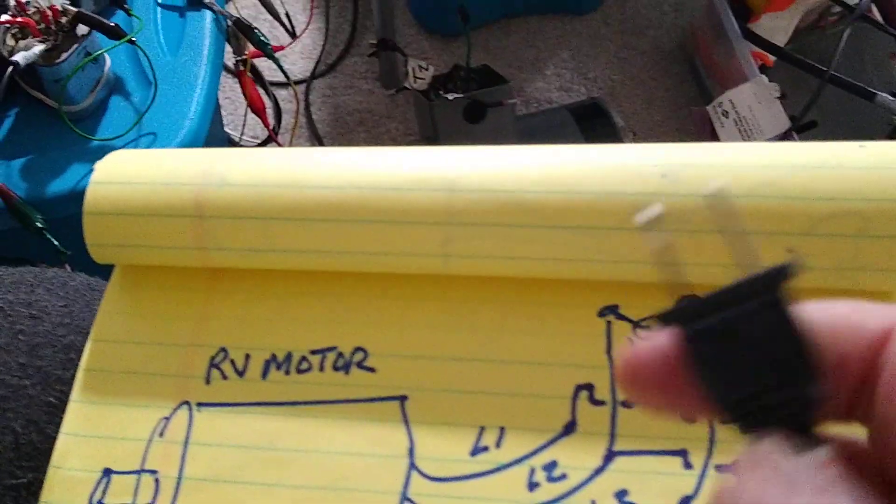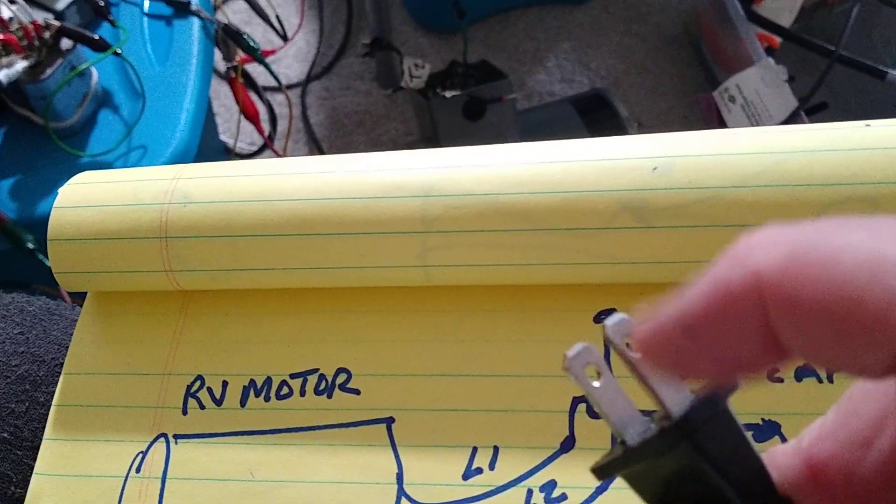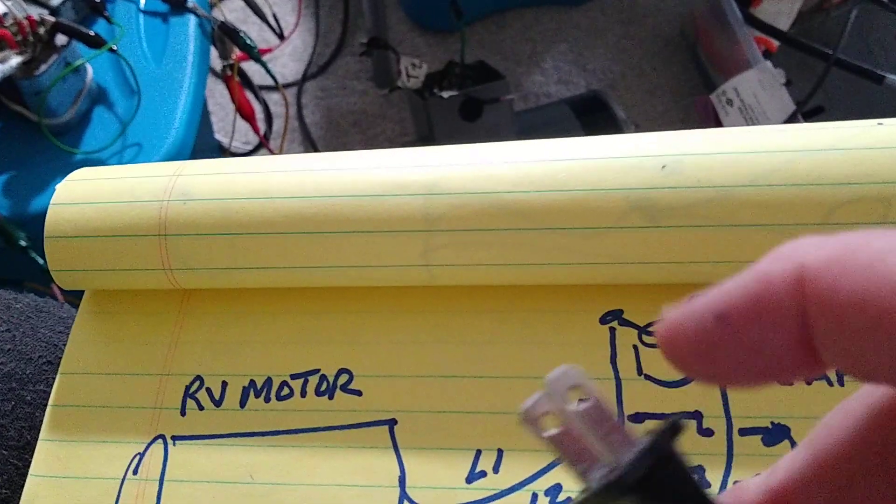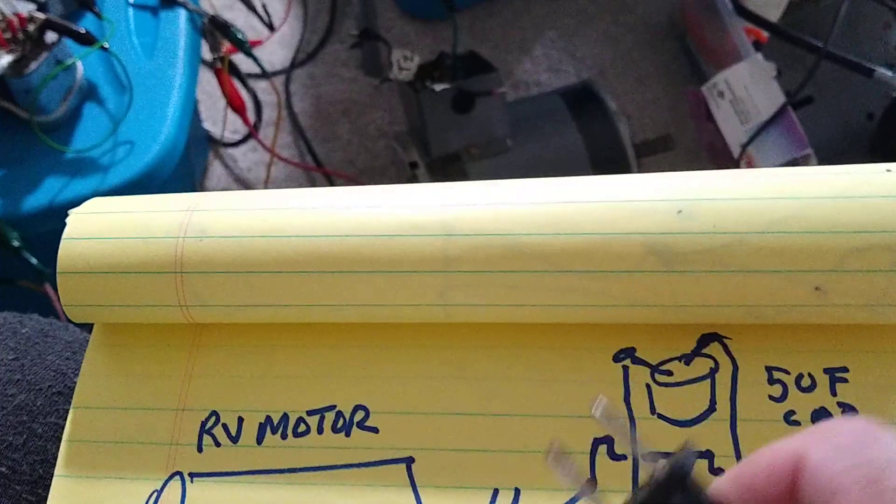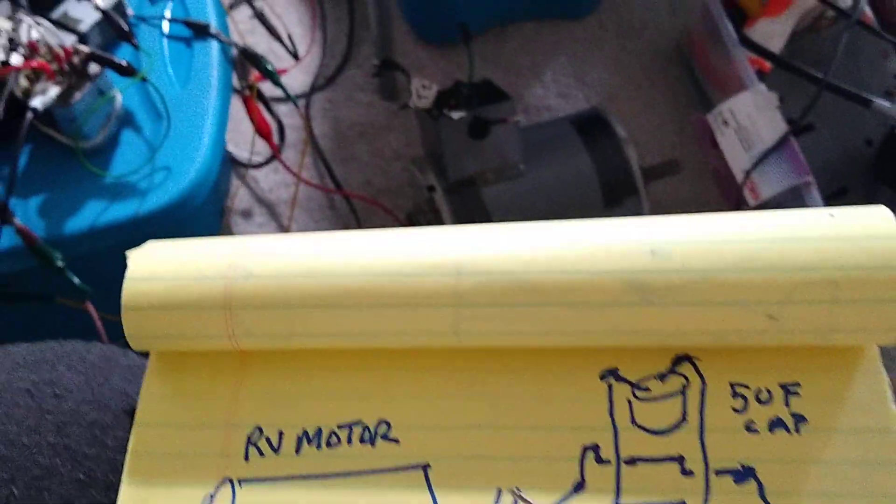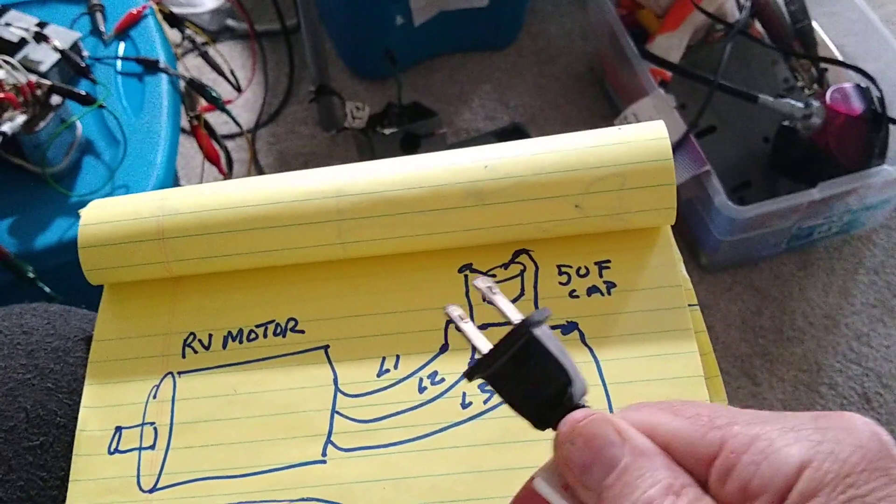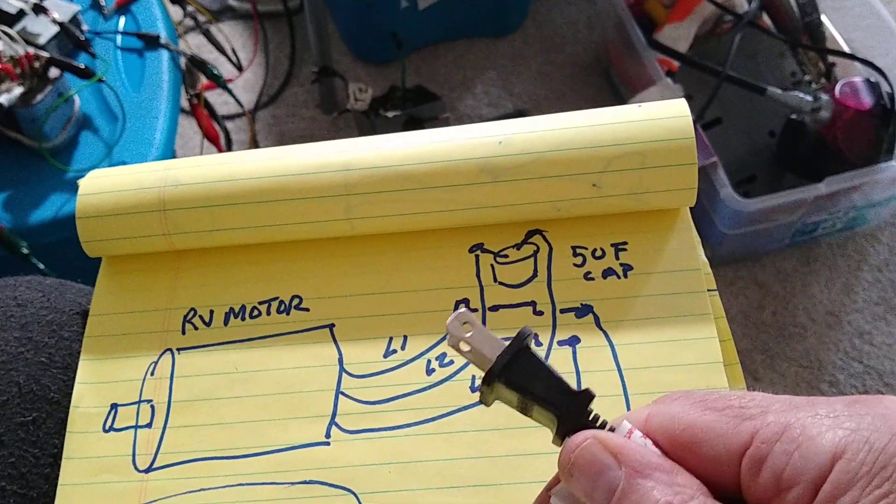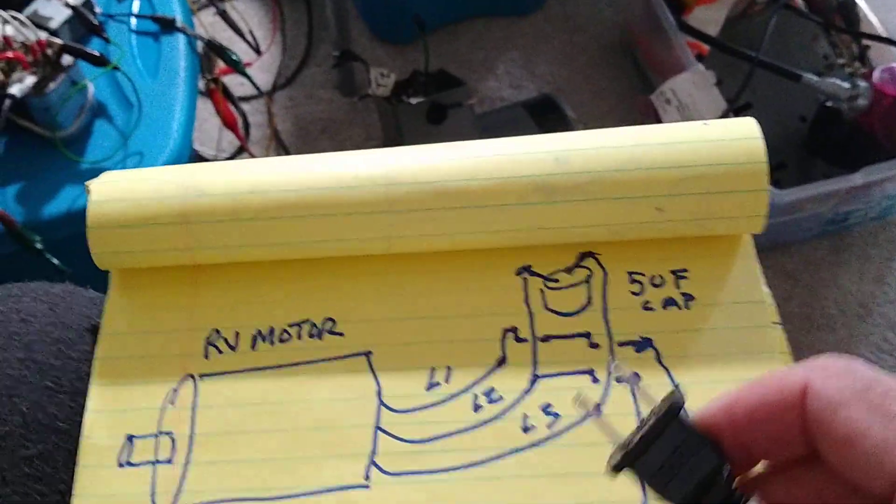And then when I measured it, the scope on the hot lead coming in from the grid, it said 830 milliamps of the amperage. So you can see why I don't trust meters.